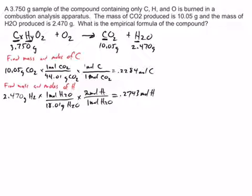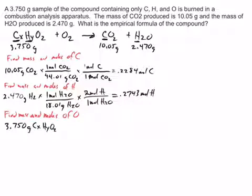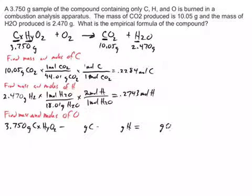Now here's our problem: how are we going to find the mass and moles of oxygen? We can't use CO2 or H2O because some of that oxygen came from outside the compound. So we're going to find the mass and moles of oxygen differently. We know that 3.750 grams of this compound contains carbon, hydrogen, and oxygen. If we know the mass of carbon and subtract it, and know the mass of hydrogen, we can figure out the mass of oxygen and then change it to moles.